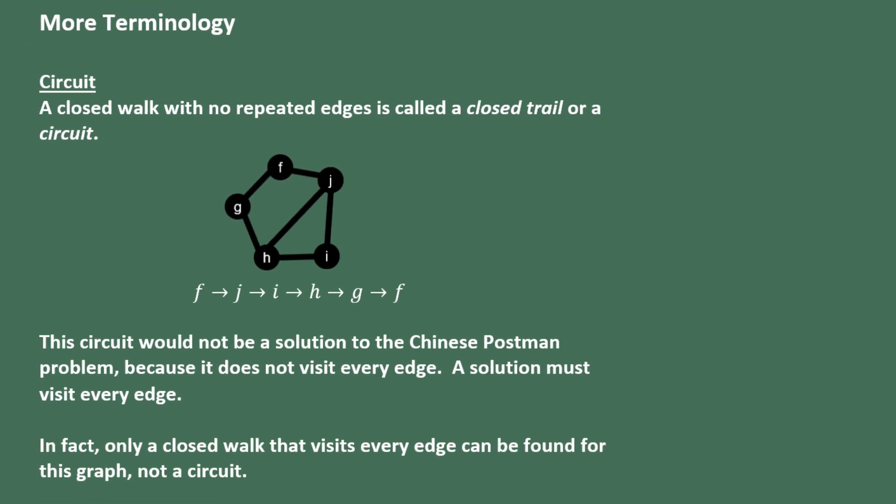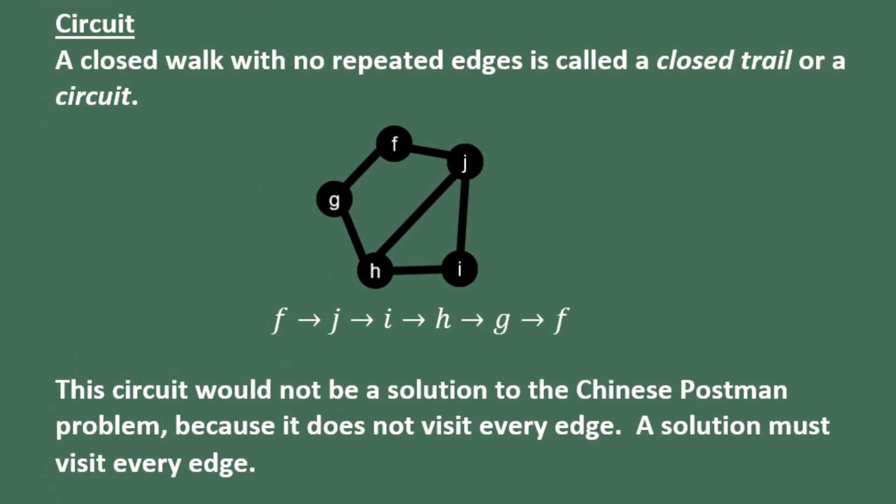Now there's a little more terminology that we need to know in order to discuss the Chinese postman problem. A closed walk with no repeated edges is called a closed trail or circuit. For example, in this graph we have the route from F to J, J to I, I to H, H to G, and G to F. This is called a closed trail because trails have no repeated edges. But another term for the same concept is a circuit.